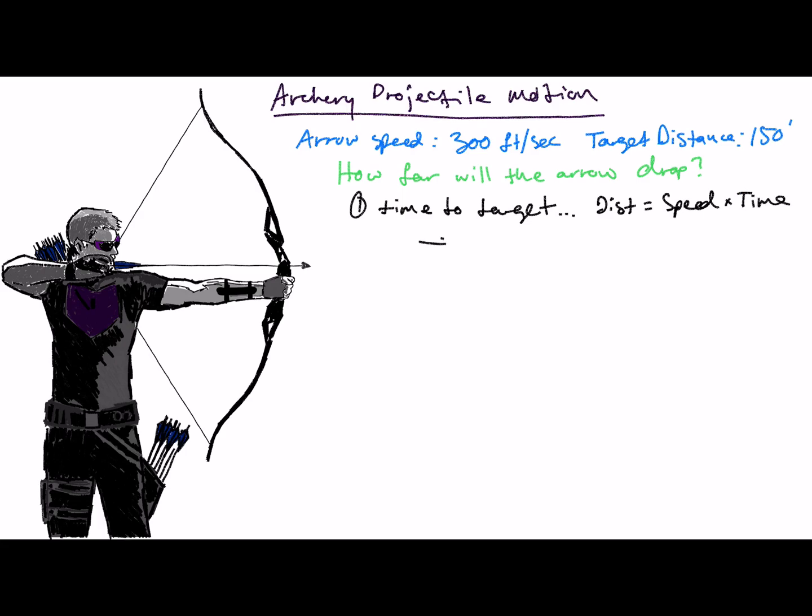First, we have to figure out the time it takes for the arrow to reach the target. Since we ignore the force of drag during projectile motion calculations, an arrow flying 300 feet per second will take half a second to reach a target 150 feet away. This is the amount of time the arrow will be falling.